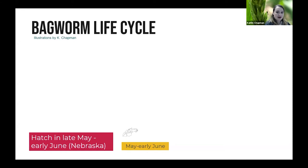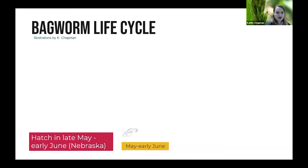In Nebraska, bagworms hatch in late May to early June. This timeframe differs elsewhere because their life cycle is entirely dependent on temperature. When they hatch, they're tiny caterpillars that produce silk to make their bags, but they can also balloon — the silk catches the wind and carries the caterpillar from host plant to host plant, allowing them to migrate.